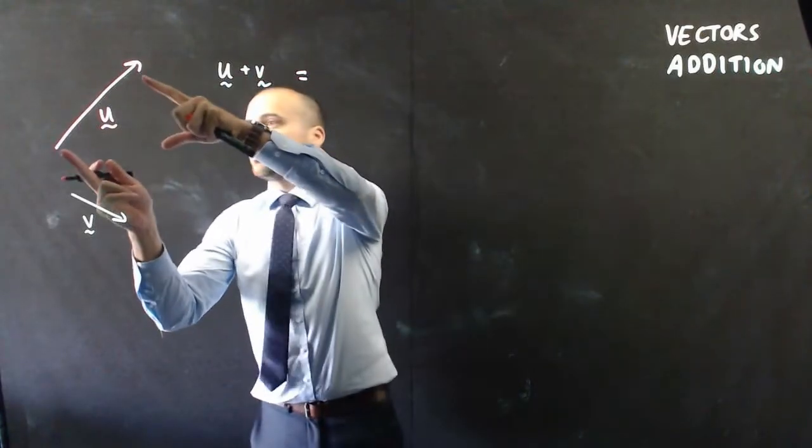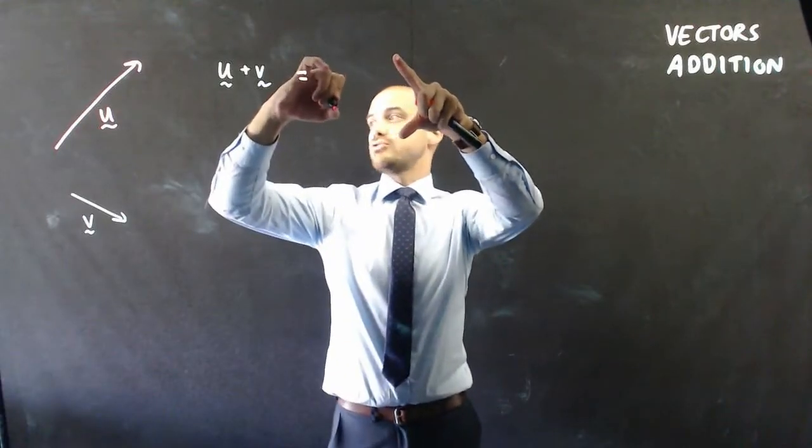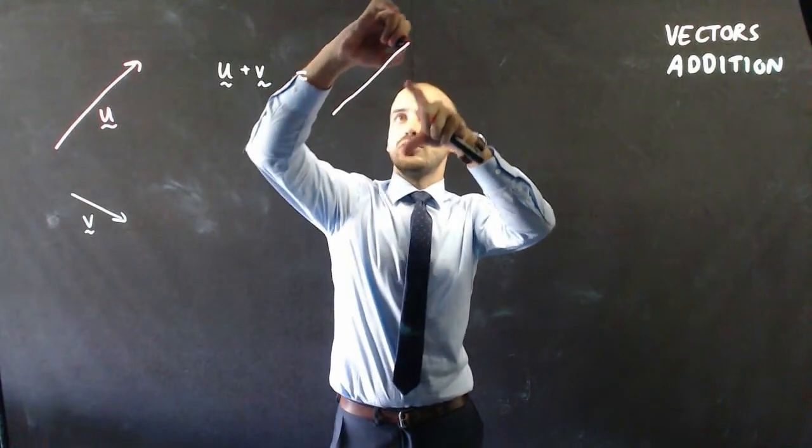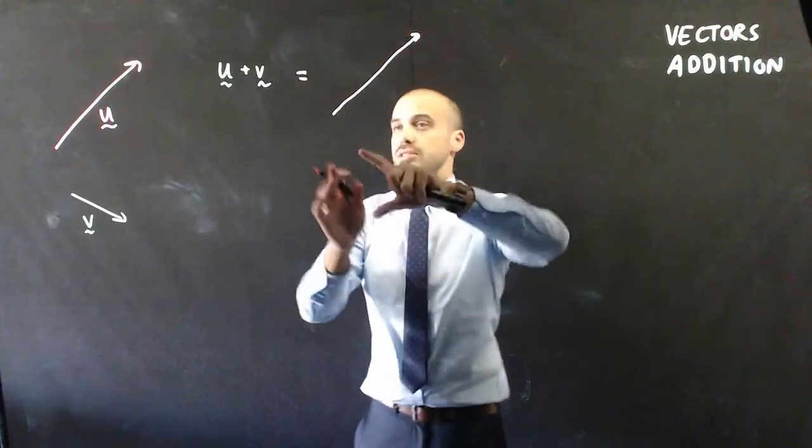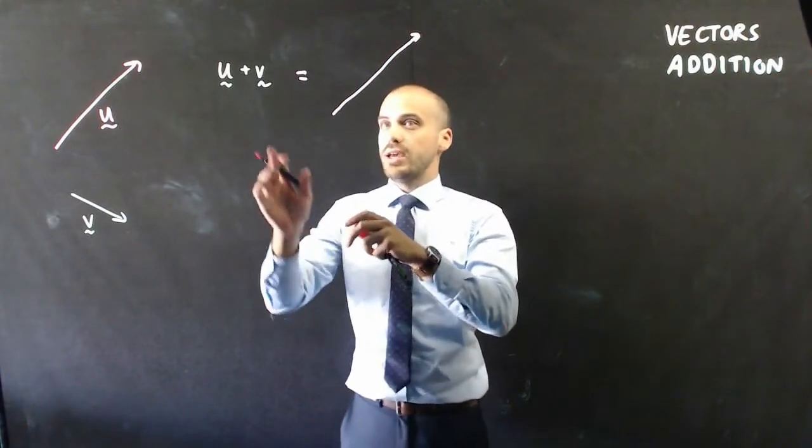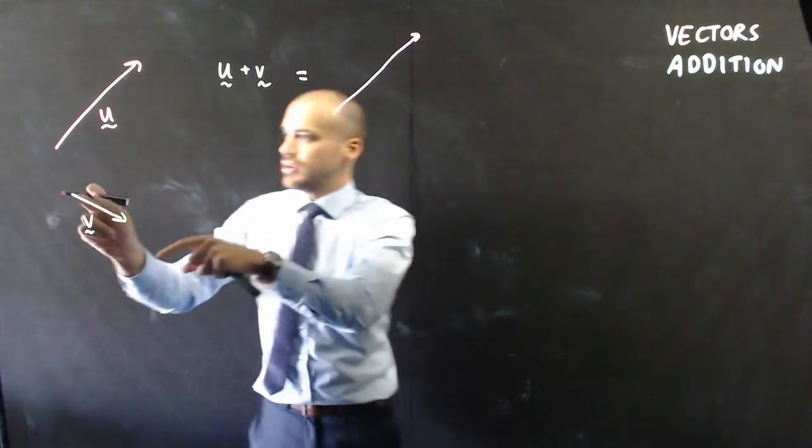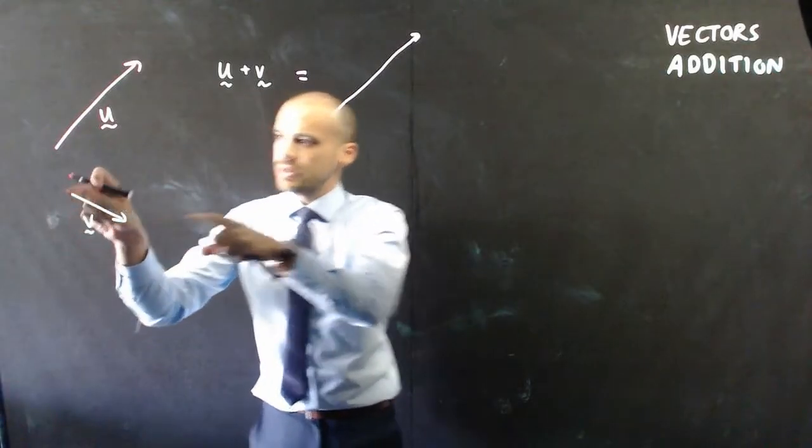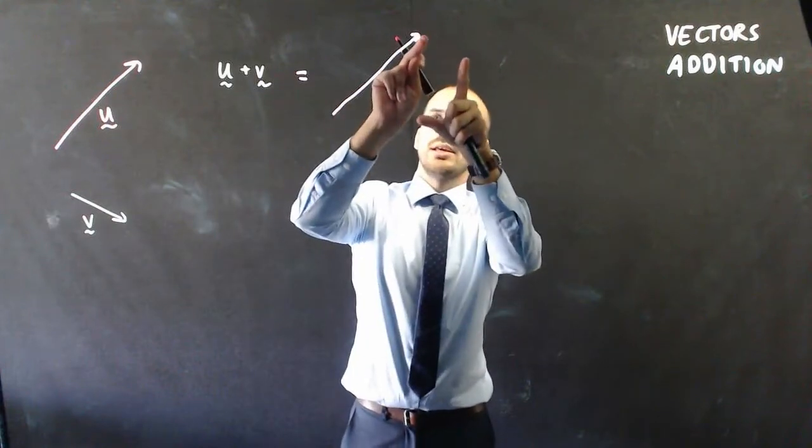It's going to be equal to the vector u, so I'm going to do my best to draw u exactly the same. You've got rulers and protractors and things, so you can make sure that the angles and stuff are correct. And then, I'm going to take the tail of v, and put it here.